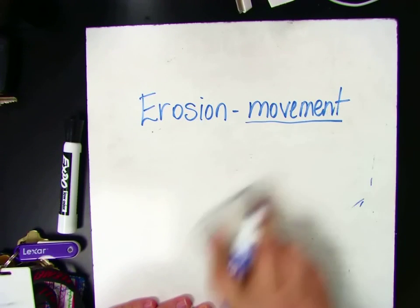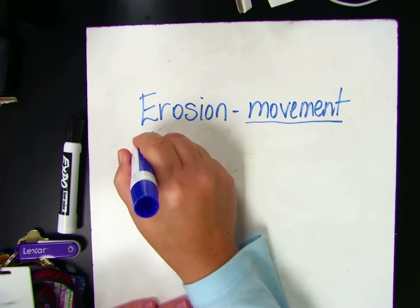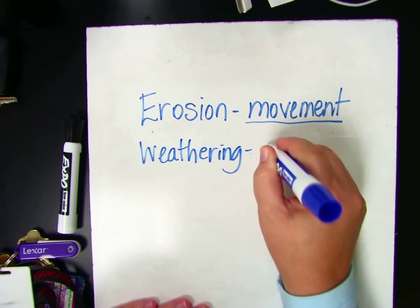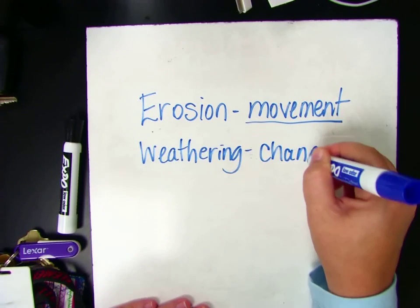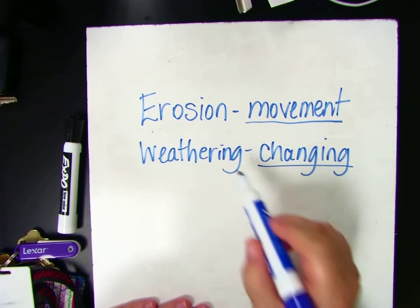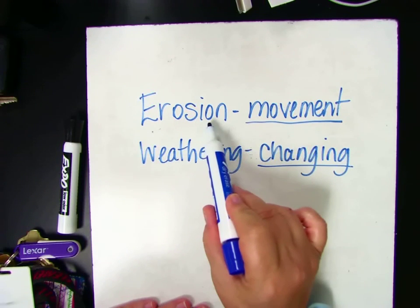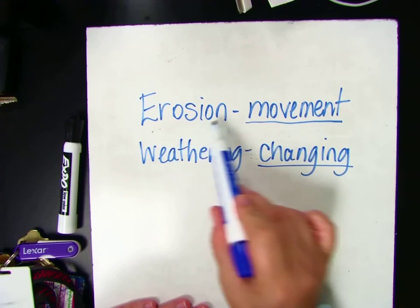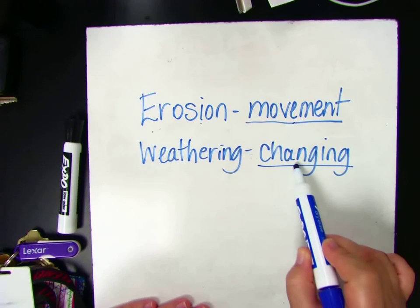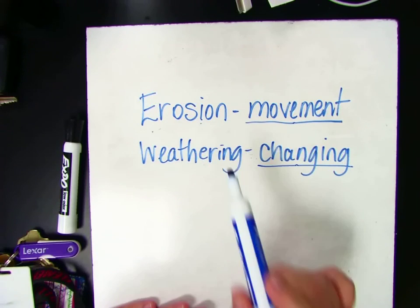So erosion is movement, and weathering is changing — like breaking or wearing down. If you can remember those two clues, that should help you determine: if the rock is moving, then it's erosion; if the rock is changing, like breaking or wearing down, then it's weathering.